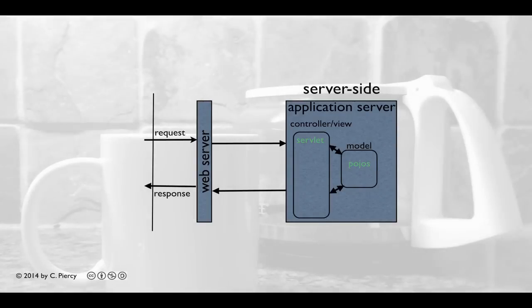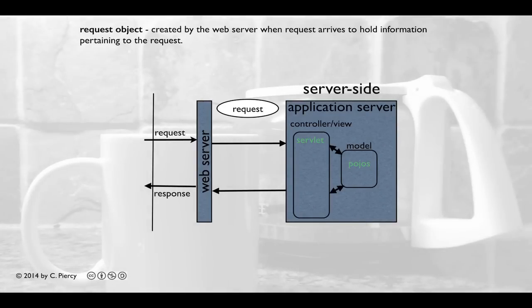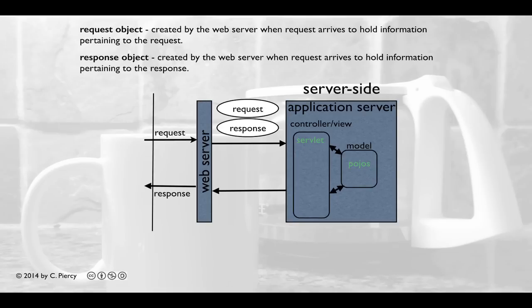When a request comes in, the web server will immediately create two objects. First, the request object will be created to hold information that pertains to the request. This can include any user-supplied data that is sent over from the client, perhaps from an HTML form. The server will also create a response object, which is created to hold any information pertaining to the response. This can include any HTML, CSS, or JavaScript that we wish to send back to the client.